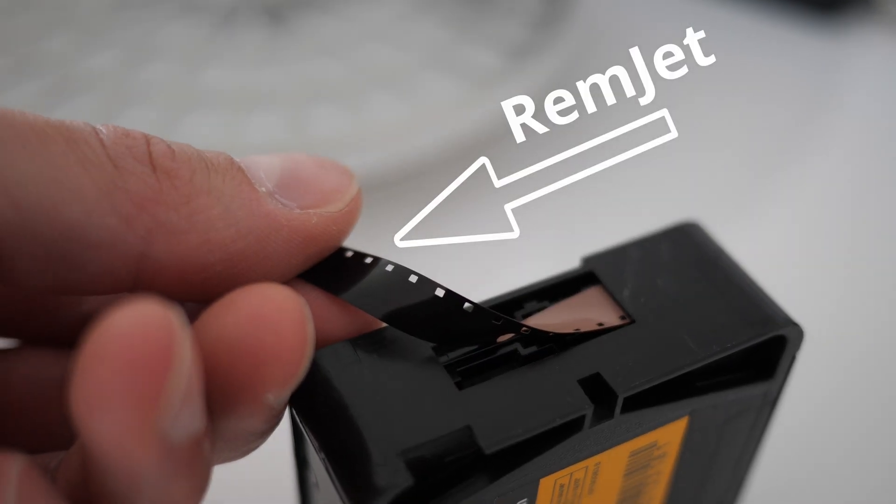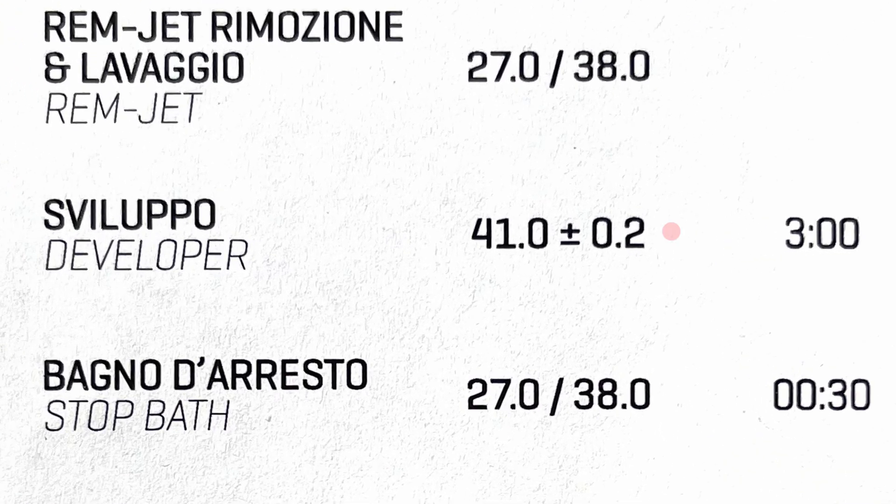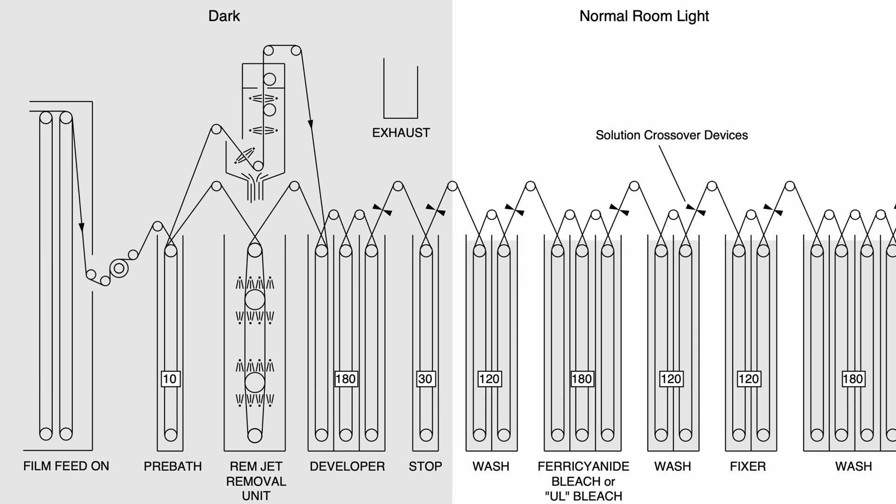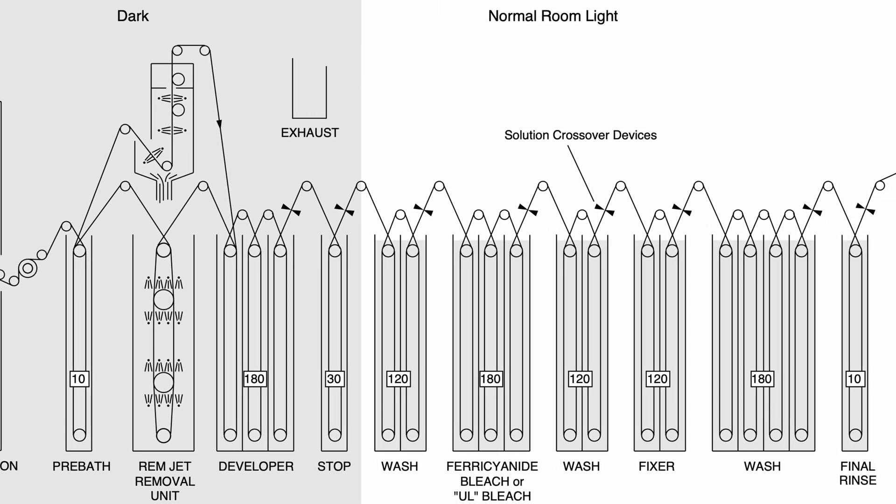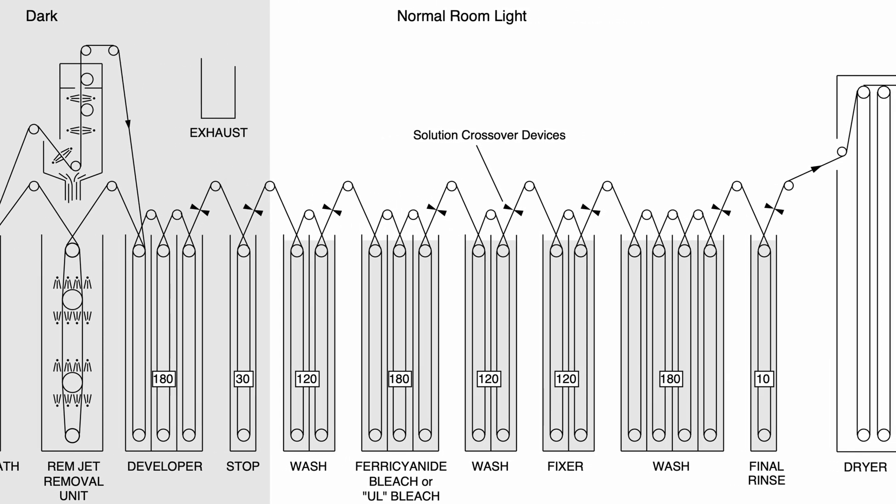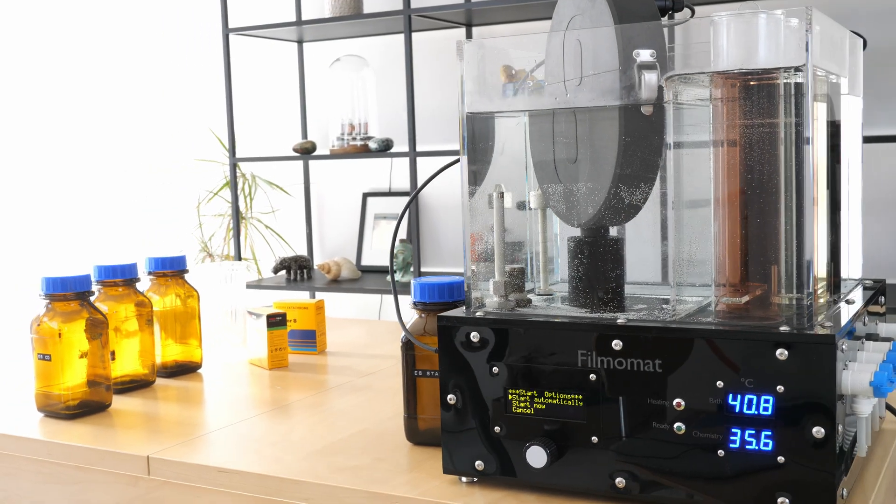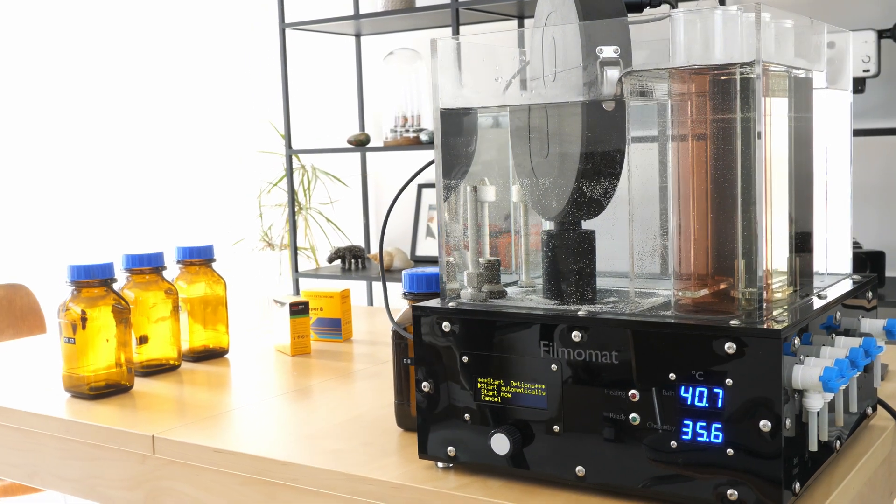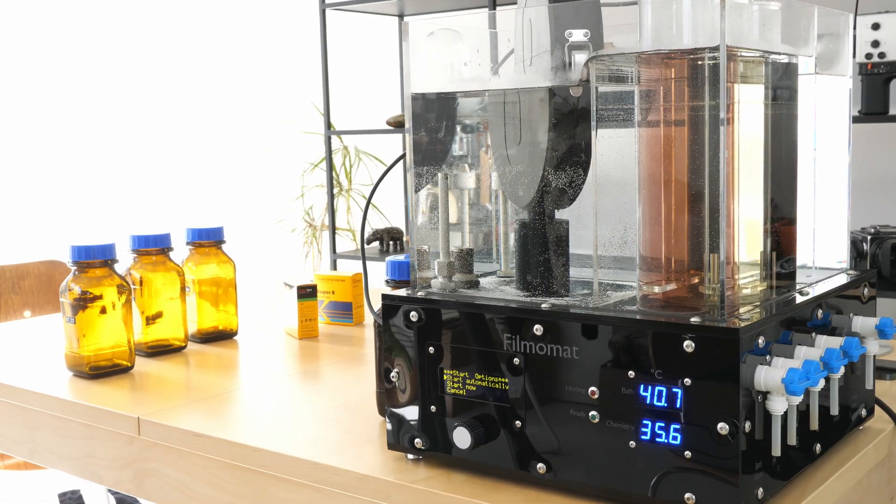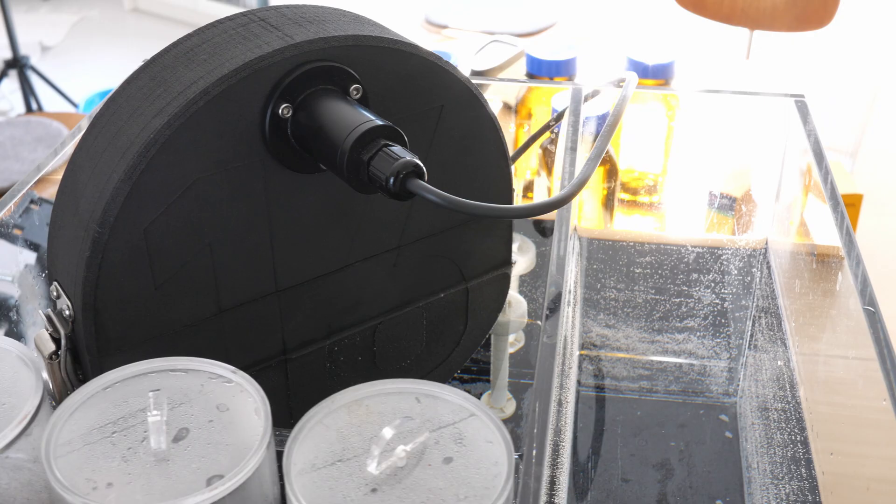To make things worse, the developer even needs a different temperature compared to the rest of the process. You have to keep in mind that the ECN2 process is designed for large industrial applications with big continuous film processors. It was never intended to be used in small processors like the Filmomart. So in order to adapt the process to a machine like the Filmomart, we will need to make a few modifications.